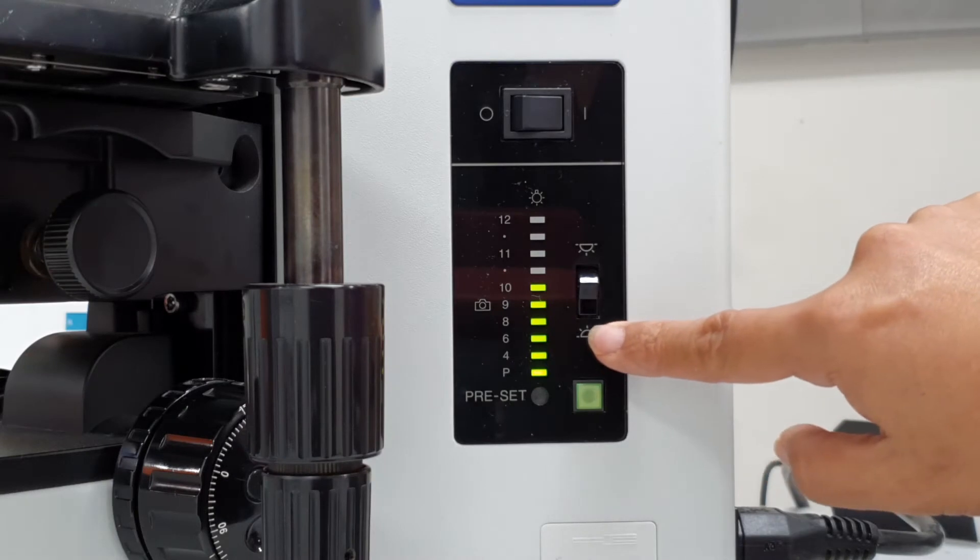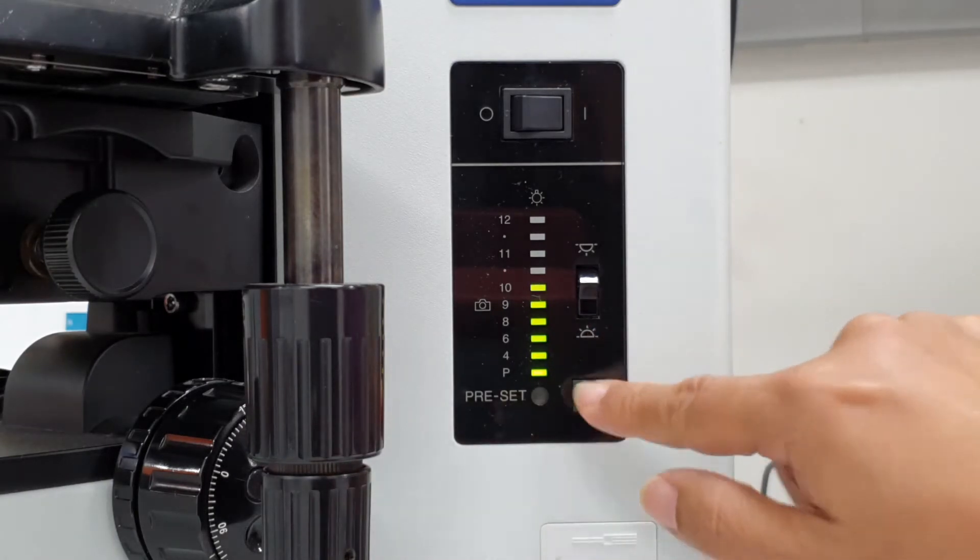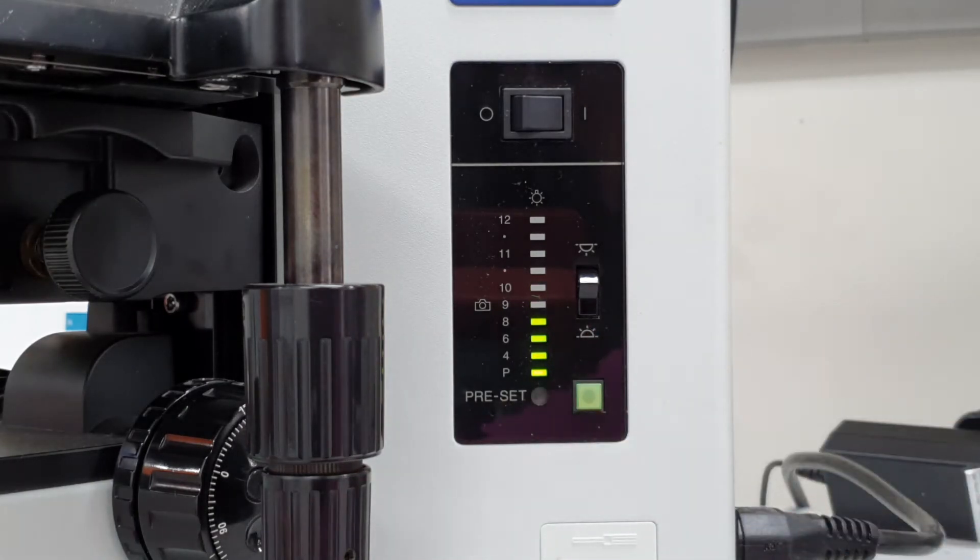First check the bottom lamp is on and the preset is off so that you can adjust the light intensity and that the bright level is suitable.